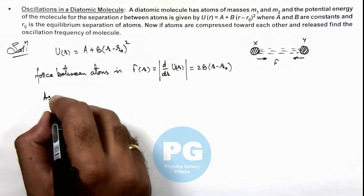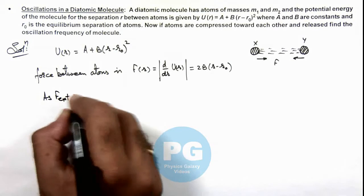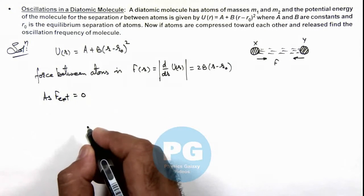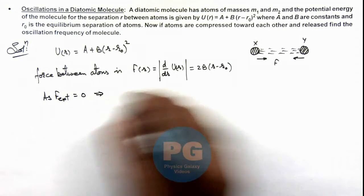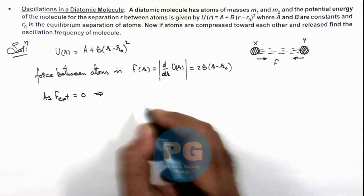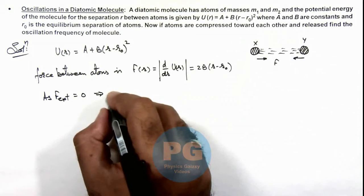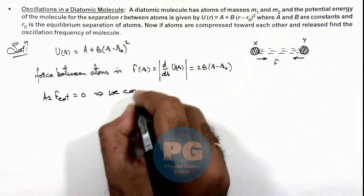Now in this situation, here we can see as F external on the system is zero. This implies here for a two-body system when no external force is acting, we can consider.